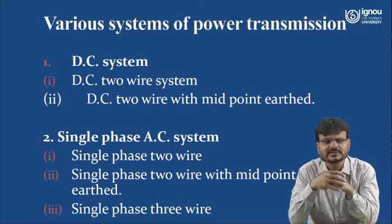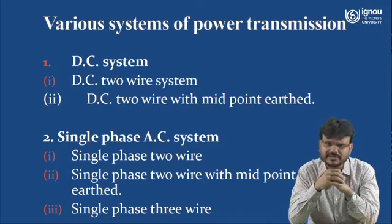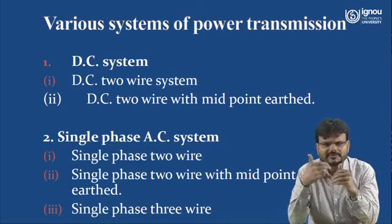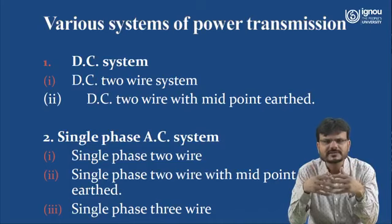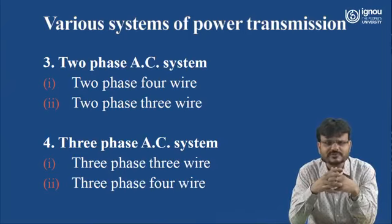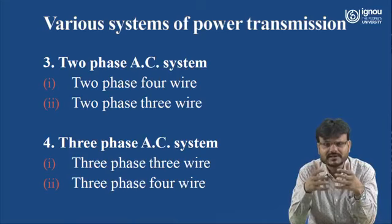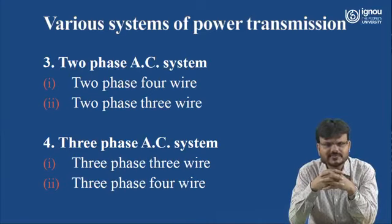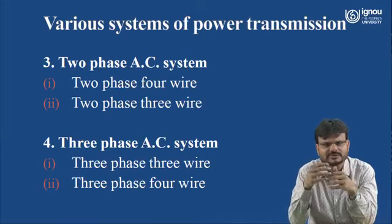Various systems of power transmission include: DC systems (DC 2-wire, DC 2-wire with midpoint earth), single-phase AC systems (single-phase 2-wire, single-phase 2-wire with midpoint earth, single-phase 3-wire), 2-phase AC systems (2-phase 4-wire, 2-phase 3-wire), and the main system used — 3-phase AC — classified as 3-phase 3-wire (used for transmission) and 3-phase 4-wire (used for distribution network).